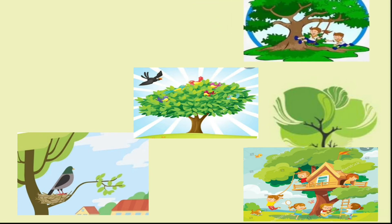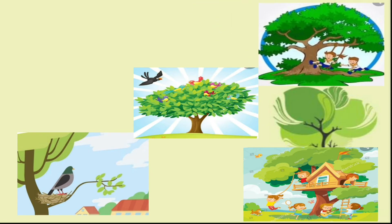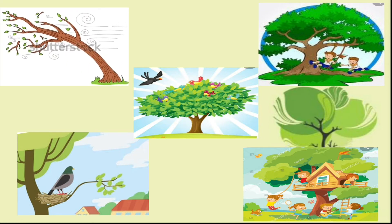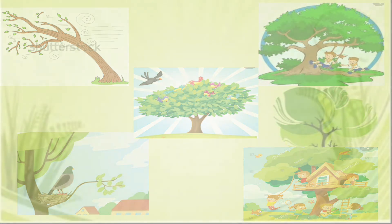Trees are also for swinging. They are for children to play around them and for everyone who lives on earth. They are also for the wind to blow through. This is how in the first stanza the poet stresses and emphasizes the advantages of trees.